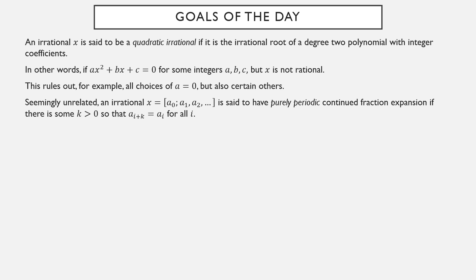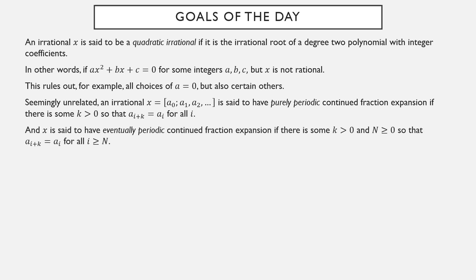An irrational number is said to have a purely periodic continued fraction expansion if there is a k such that a_{i+k} = a_i for all i — the partial quotients, if you move k terms down the list, begin to repeat themselves. An x is said to be eventually periodic if there is a k and an n so that a_{i+k} = a_i but only past a certain point. So purely periodic means the pattern repeats straight away; eventually periodic means there is a pattern that repeats but only starts after a certain index n.